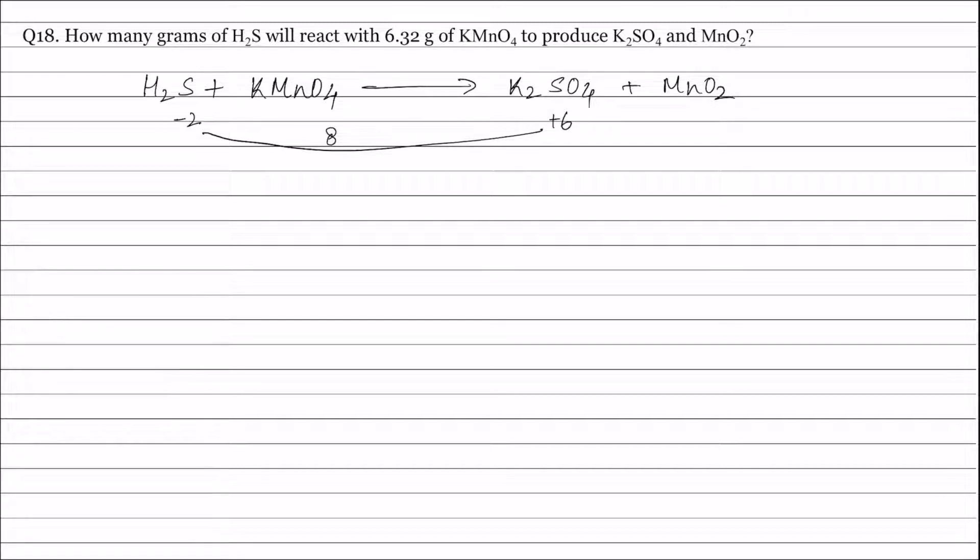In KMnO4 the oxidation number of manganese is 7 and in MnO2 the oxidation number of manganese is 4. Therefore change in oxidation number of manganese is 3.